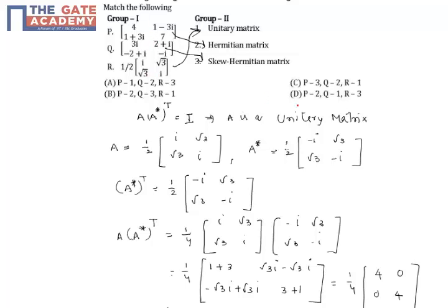So the final matching is: R equals 1 (unitary), P equals 2 (Hermitian), and Q equals 3 (skew-Hermitian). Therefore, from the given options the answer is B.